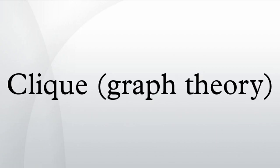In the mathematical area of graph theory, a clique is a subset of vertices of an undirected graph, such that its induced subgraph is complete. That is, every two distinct vertices in the clique are adjacent.